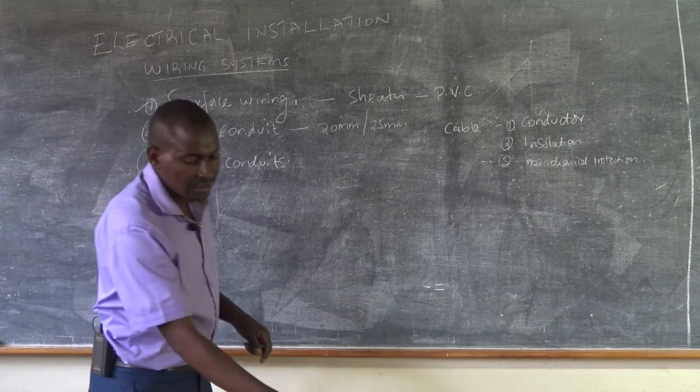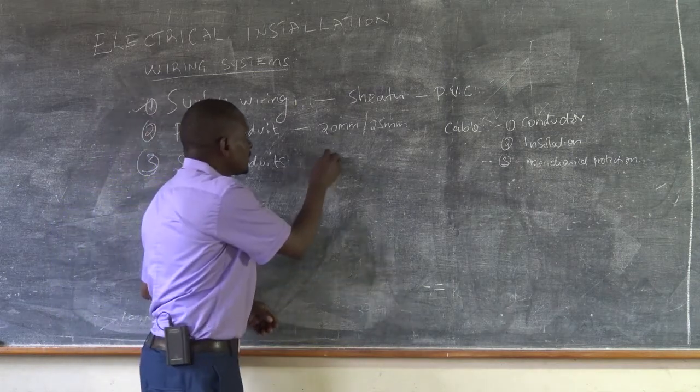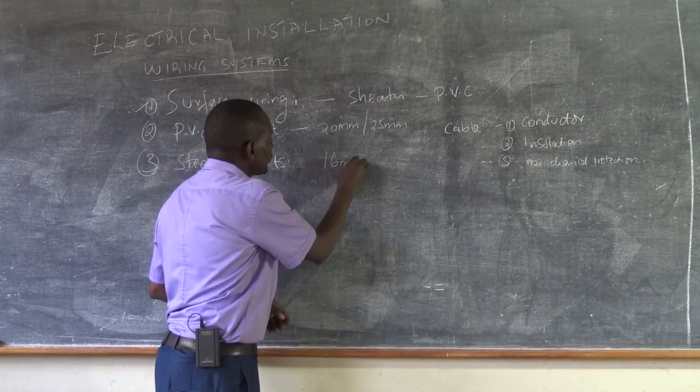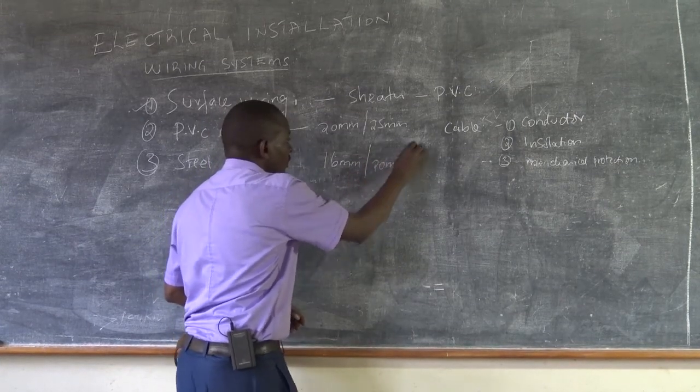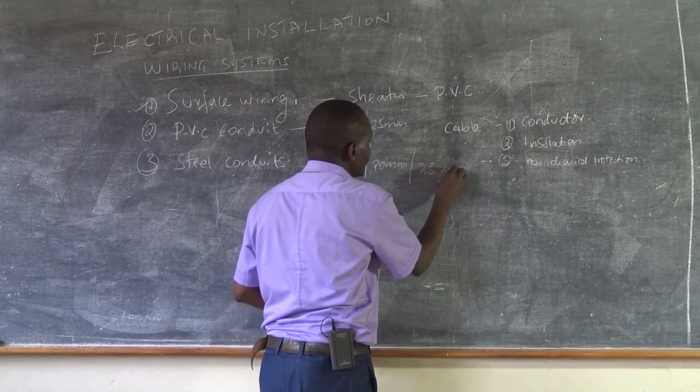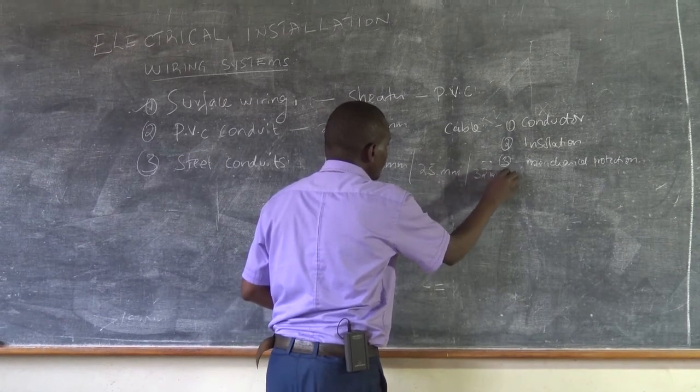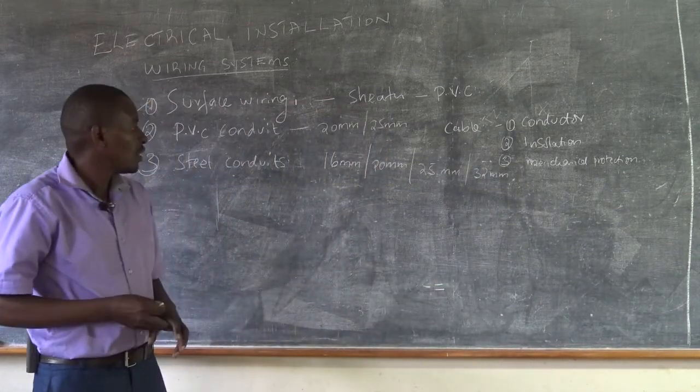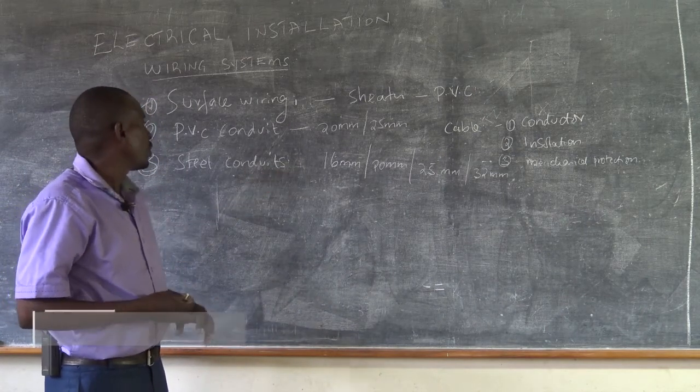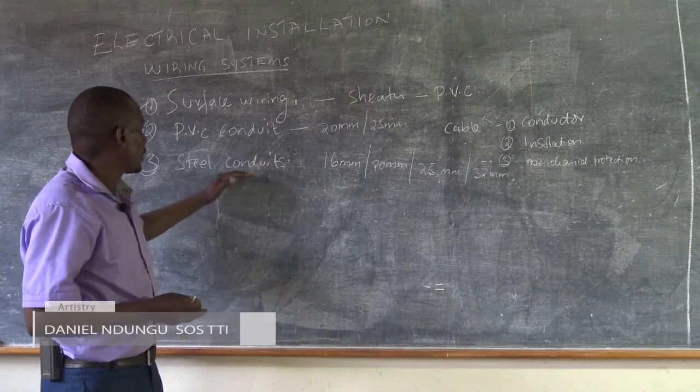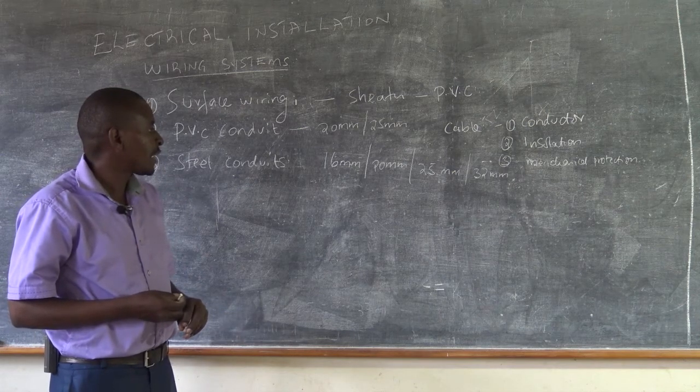Just as we have seen, the steel conduit also comes in sizes. We have one that is small, 16 millimeter. We have 20 millimeter. We have 25. And we have 32 millimeters. So that is the sizes that we have for conduit. We have the same for PVC conduit. But we are saying that steel conduit offers a better mechanical protection.